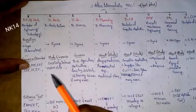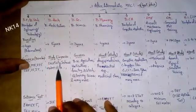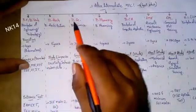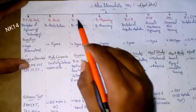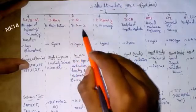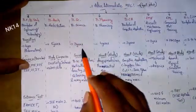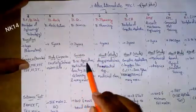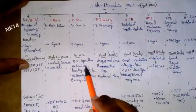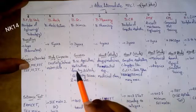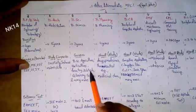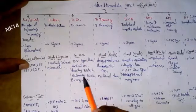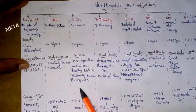Next is BSc — Bachelor of Science — with a duration of three years. In Bachelor of Science you have many streams: agriculture, arts and culture, forestry, biotechnology, veterinary science, and many more courses are available in this program.